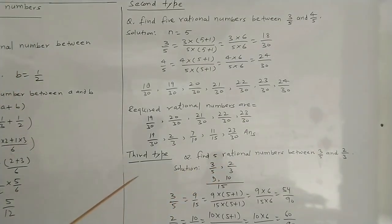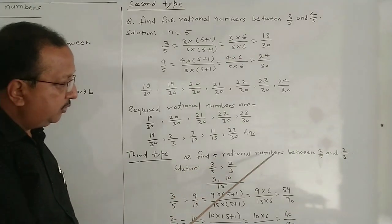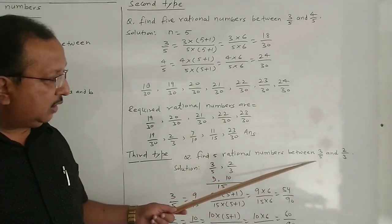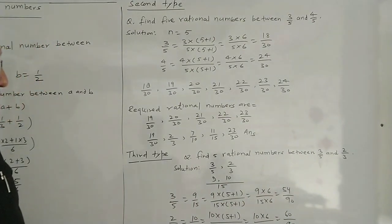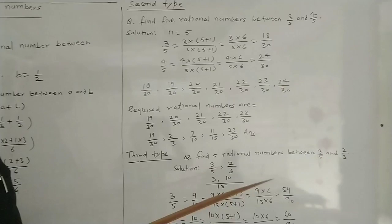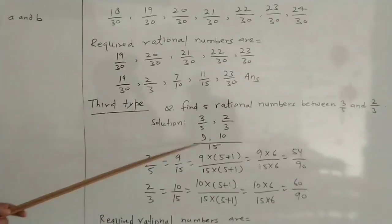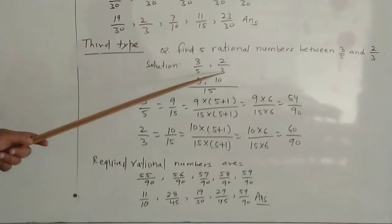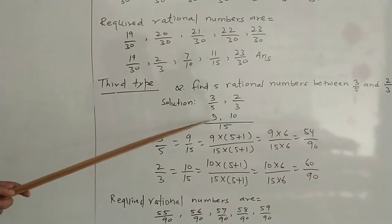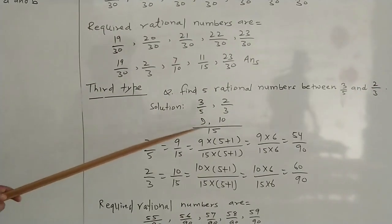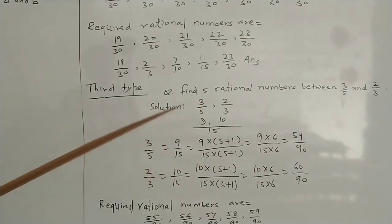Now the third method — we understand it with an example. Find 5 rational numbers between 3/5 and 2/3. Here the denominators are not the same, unlike the previous question. So first we make the denominators equal by taking the LCM of 5 and 3, which is 15. Thus 3/5 becomes 9/15, and 2/3 becomes 10/15.